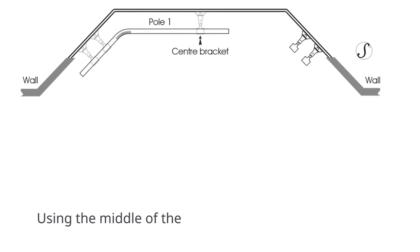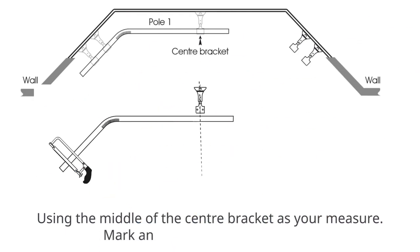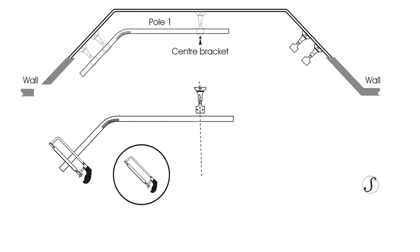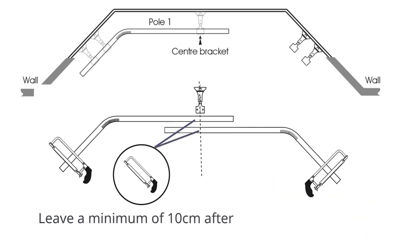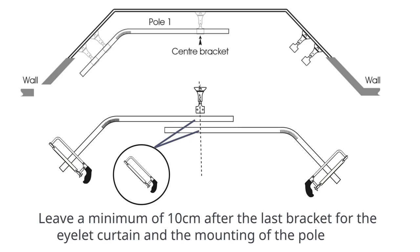Trimming the bay pole to size. Using the middle of the center bracket as your measure, mark and trim each pole to length. Leave a minimum of 10 cm after the last bracket for the eyelet curtain and the mounting of the pole finial.